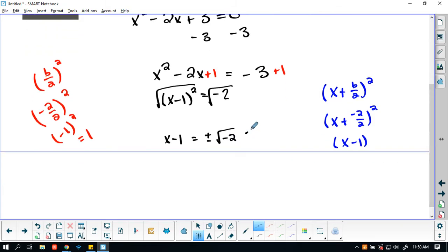If you remember, -2 consists of the square root of -1 and the square root of 2. The square root of -1 is our imaginary, so we're going to pull that out.